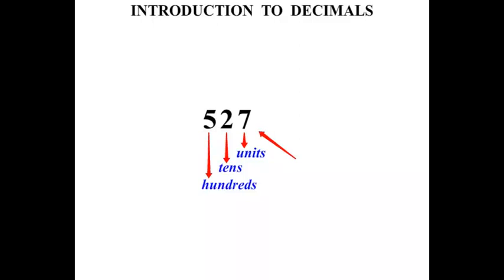Now if we put something after that whole number, a point, that is known as a decimal point. It separates the whole number part with a decimal part.